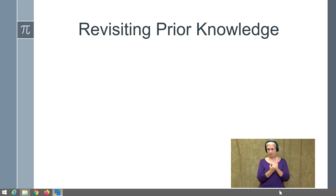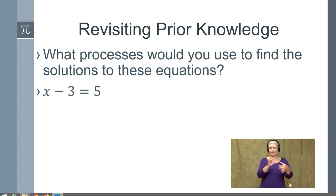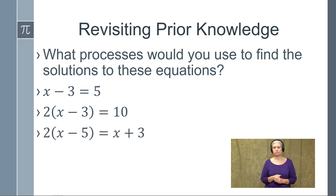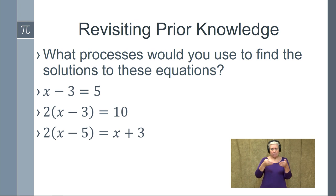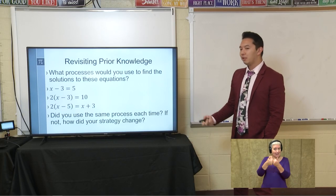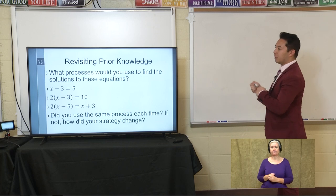As we think about revisiting prior knowledge, I want you thinking about what processes you would use to find the solutions to the following equations. The first one being x minus 3 is equal to 5. The second, 2 times the quantity x minus 3 is equal to 10. And then the third, 2 times the quantity x minus 5 is equal to x plus 3. I want you focusing on the process — how are you going to find solutions to these, and are you using the same process each time? If not, how did your strategy change?